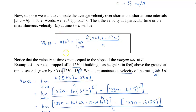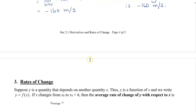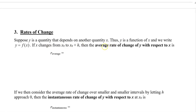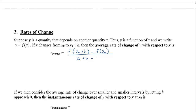This instantaneous velocity formula can apply to other rates of change. Suppose y is a quantity that depends on another quantity x, so y is a function of x written as y equals F of x. If x changes from x-naught to x-naught plus H, then the average rate of change of y with respect to x is F of x-naught plus H minus F of x-naught, all divided by x-naught plus H minus x-naught, which simplifies to the same form as the average velocity formula and can be applied to the average rate of change of anything.